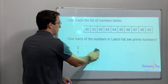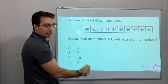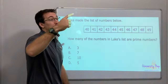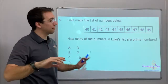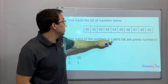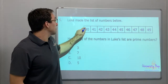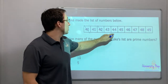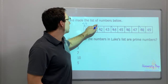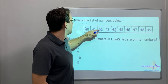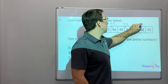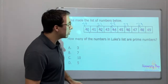Last question with prime and composite numbers — you've got to do scratch work. A lot of times they're going to try to trick you because a number will be divisible by 3. How many of the numbers in Luke's list are prime? Let's mark out the even numbers because we can divide those by 2 — 40, 42, 44 — those are not prime.